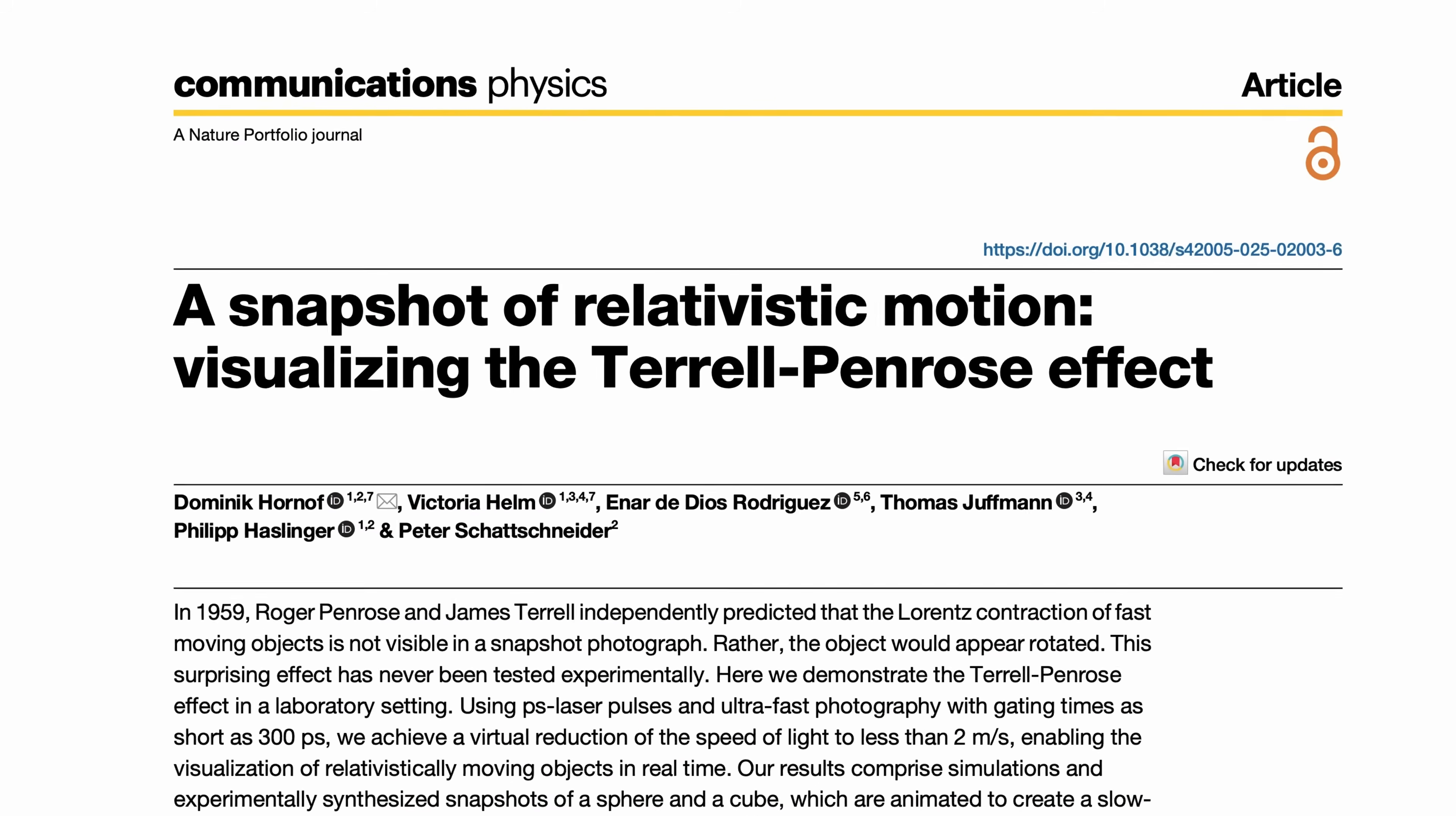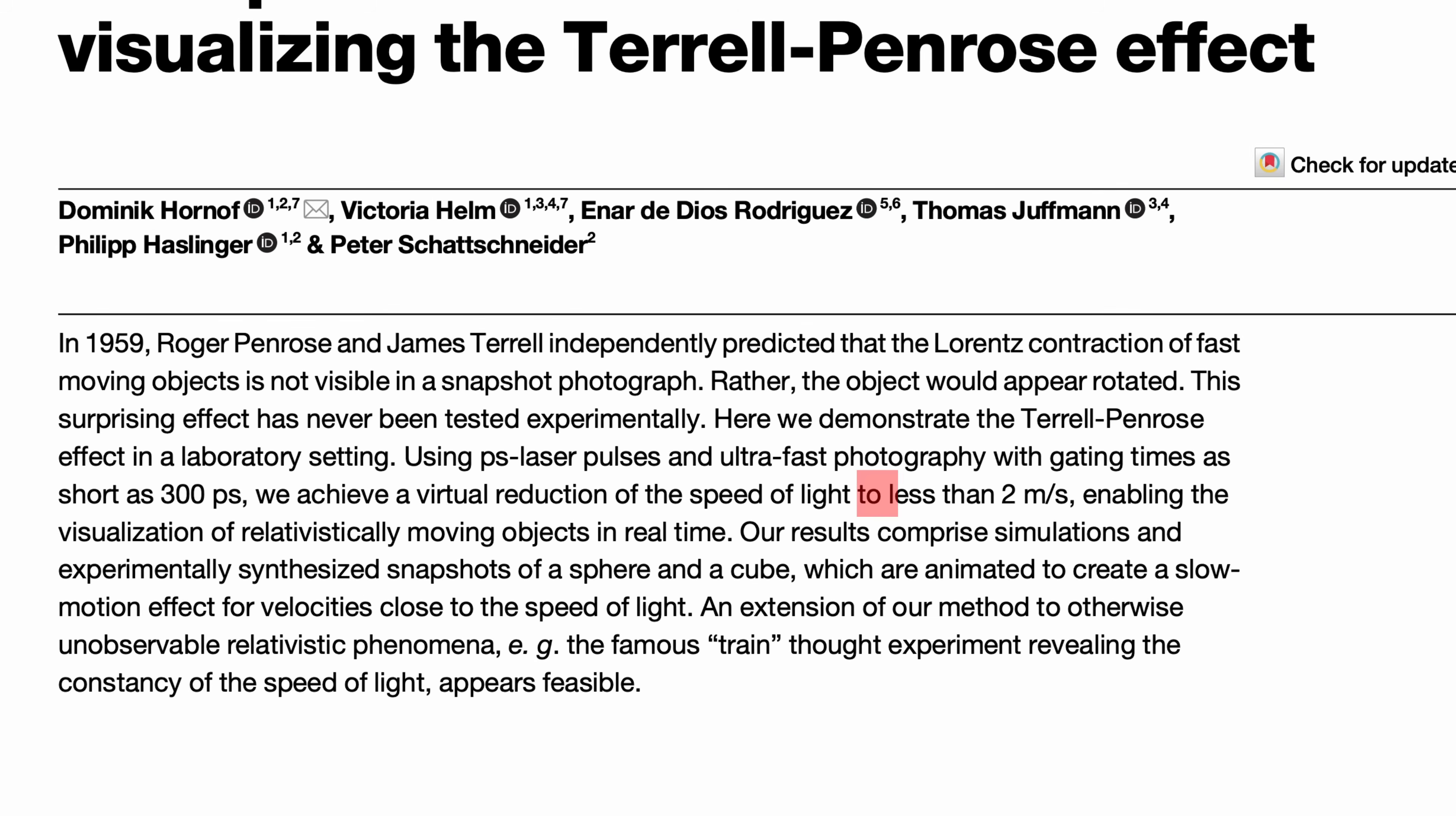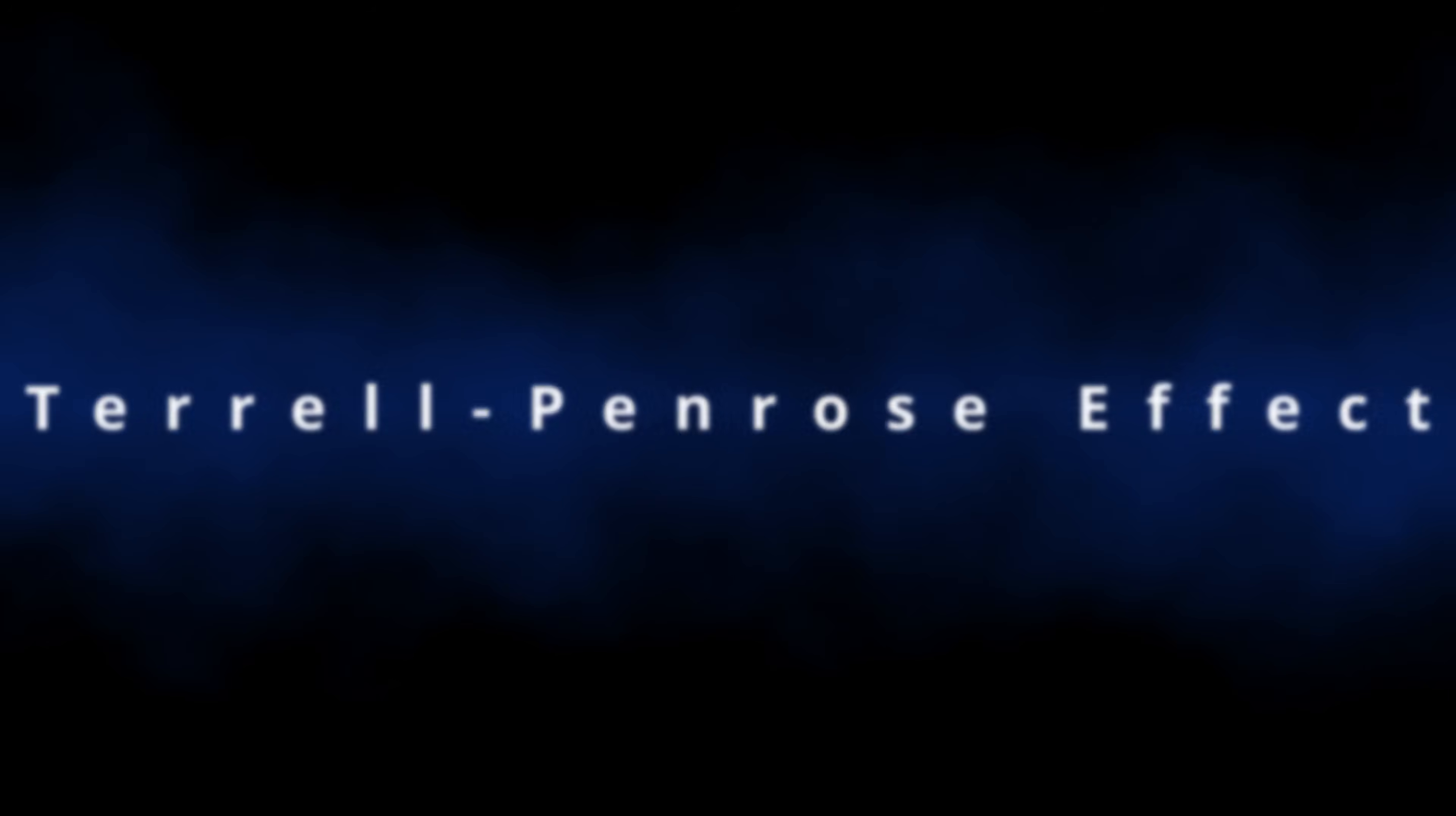Recently I came across this article where the authors claimed to virtually reduce the speed of light to less than 2 meters per second, which allowed them to measure the very famous effect of special relativity, the Terrell-Penrose effect. So what is the Terrell-Penrose effect and how do they manage to slow down the speed of light? And is this another confirmation of special relativity?